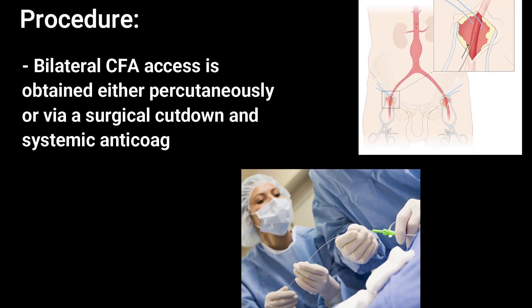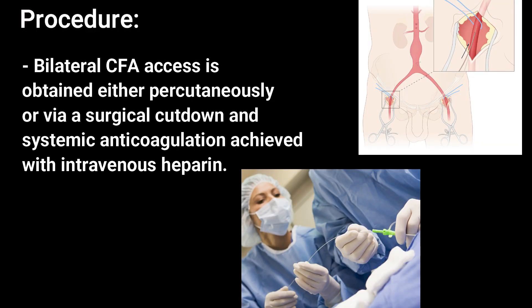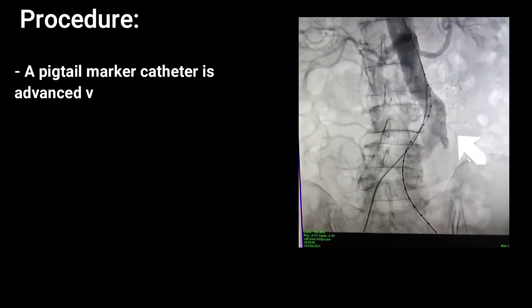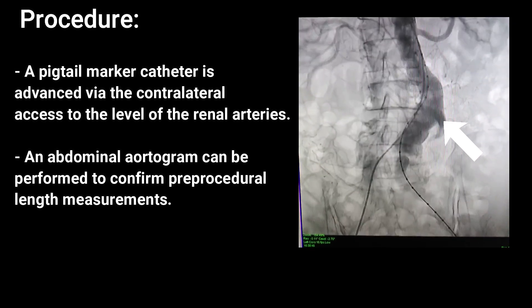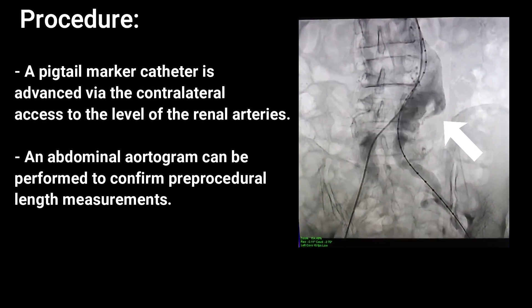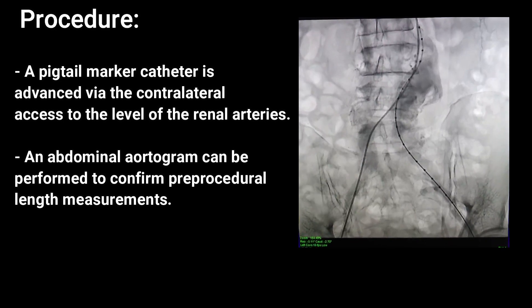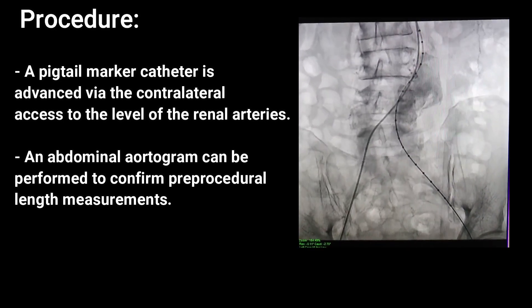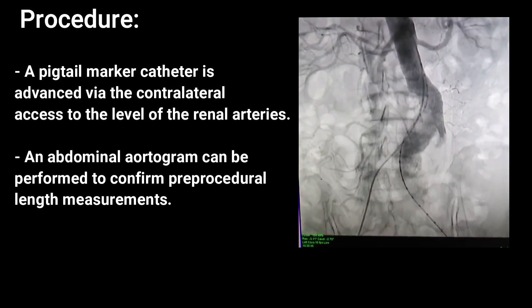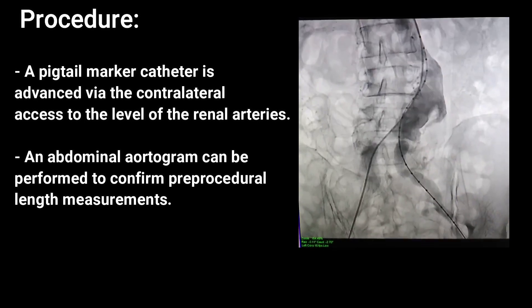The procedure begins with bilateral common femoral artery access, obtained either percutaneously or via a surgical cut-down, and systemic anticoagulation achieved with intravenous heparin. After obtaining femoral access, a pigtail marker catheter is advanced via the contralateral access to the level of the renal arteries, and an abdominal aortogram is performed to confirm pre-procedural length and measurements.